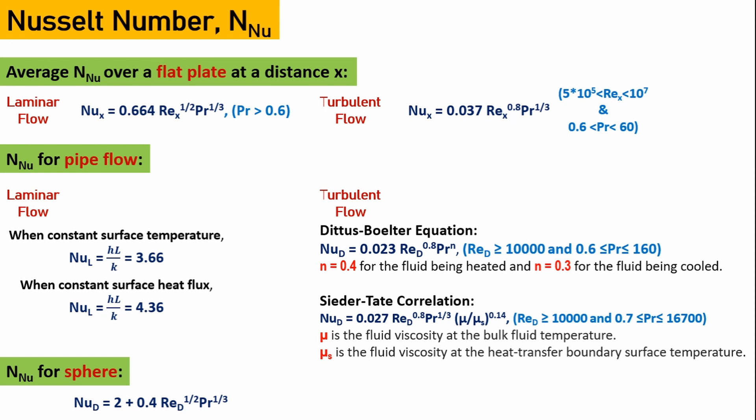For flow across a sphere, the relation includes a constant term of 2 added to the common relation. If we look at this equation and consider stagnant conditions —